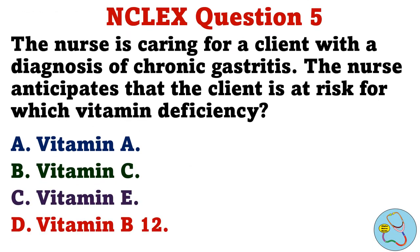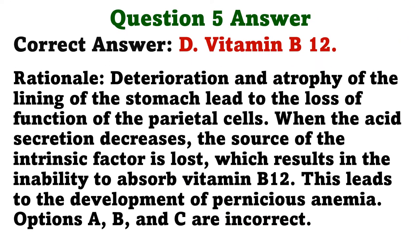Question 5. The nurse is caring for a client with a diagnosis of chronic gastritis. The nurse anticipates that the client is at risk for which vitamin deficiency? The correct answer is D, vitamin B12. Rationale: Deterioration and atrophy of the lining of the stomach lead to the loss of function of the parietal cells. When acid secretion decreases, the source of the intrinsic factor is lost, resulting in the inability to absorb vitamin B12. This leads to the development of pernicious anemia. Options A, B, and C are incorrect.